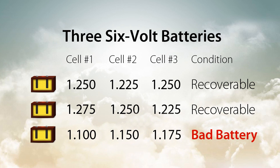In this example, battery C has an open cell because the difference between cell number one and cell number three is 0.075, more than 0.05.